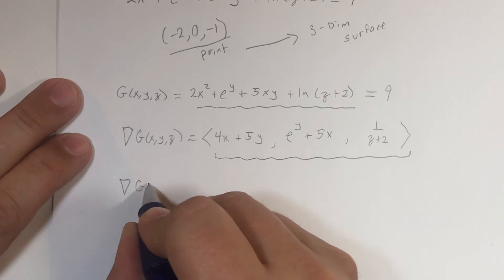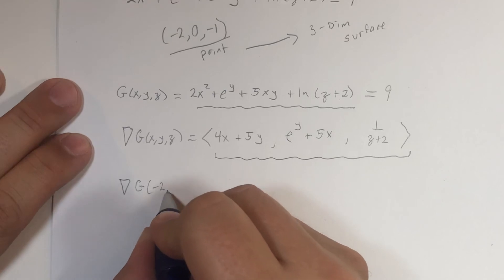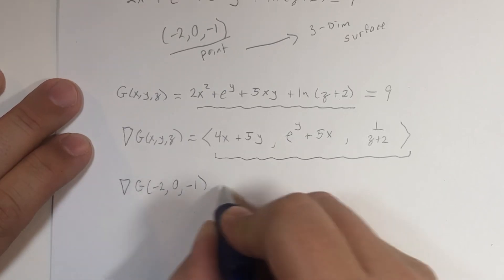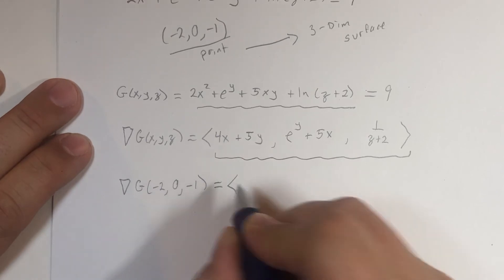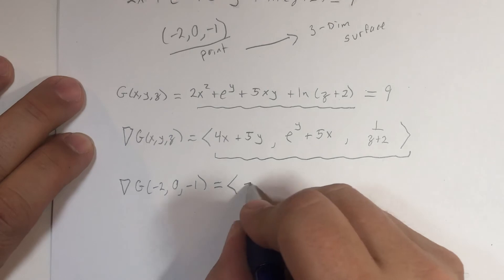So the calculation: the gradient of this three-variable function, now written in function notation, if x is -2, y is 0, and z is -1. We would just do substitution here: -8 + 0 is -8.